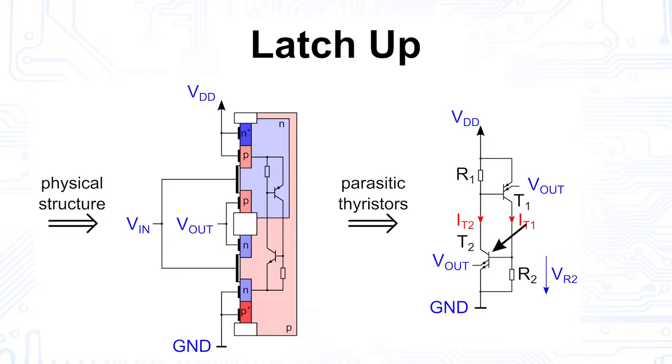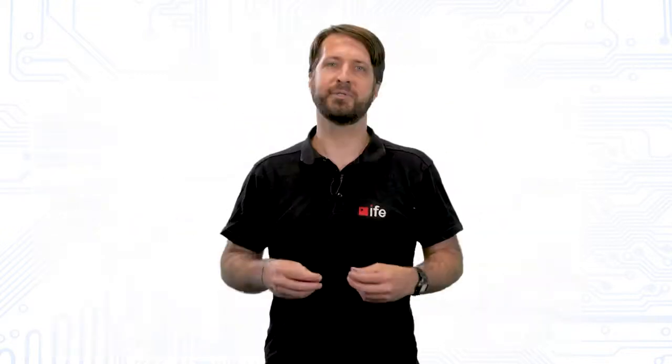The voltage drop that now occurs across resistor R1 causes thyristor T1 to open even further. This causes even more current flow through R2, in turn causing T2 to open further and so on. The process can no longer be stopped and leads to a defect or the complete destruction of the CMOS gate.